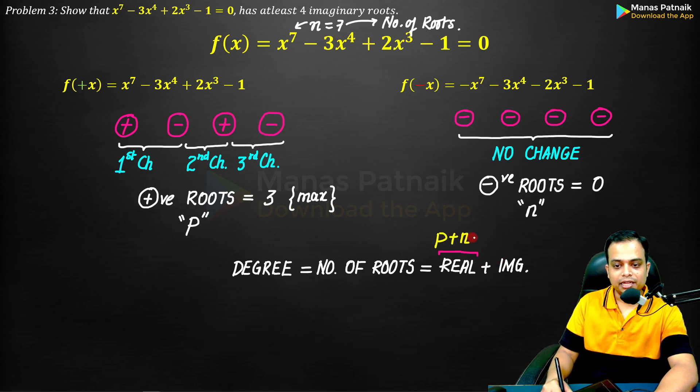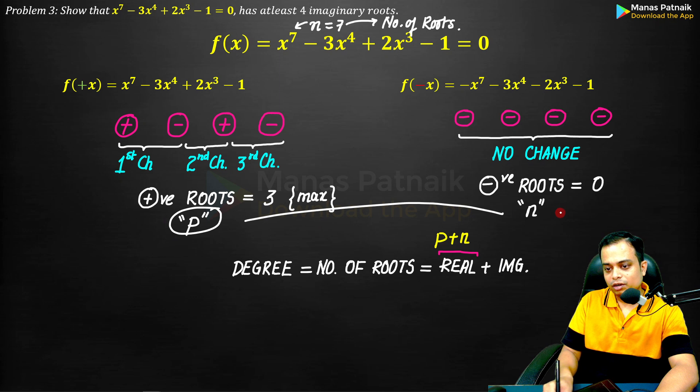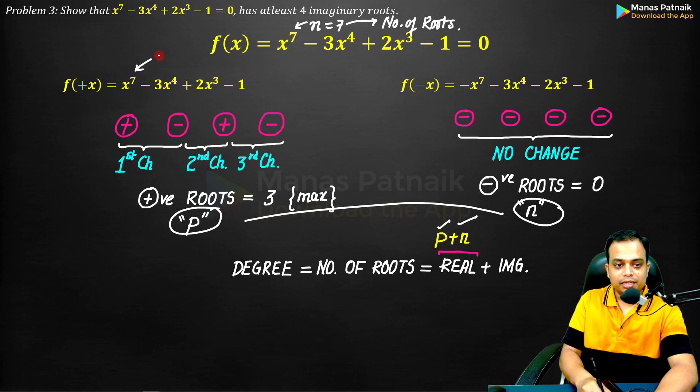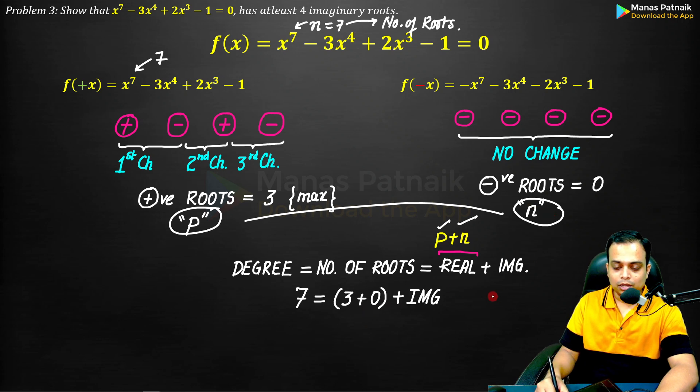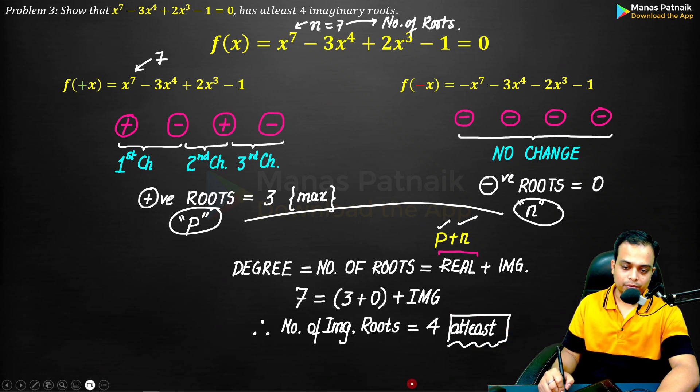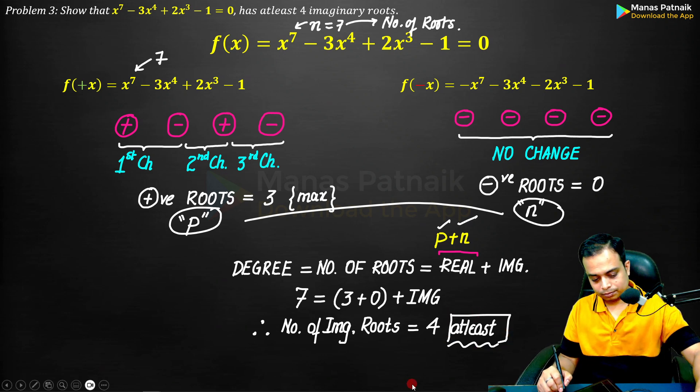Real plus imaginary, and in the real zone you've got positive roots and negative roots. Things are going to be very simple, just plug in the values. Number of roots is the degree, that is seven. Seven equals three plus zero plus the imaginary roots, and you get the value of number of imaginary roots as four, at least.